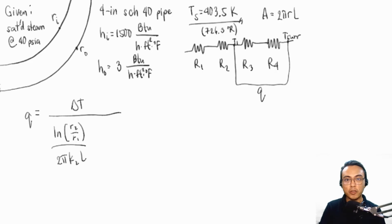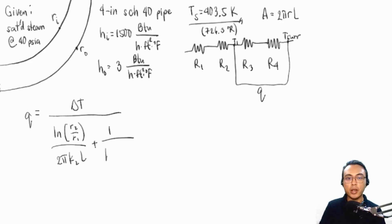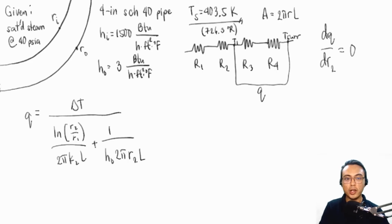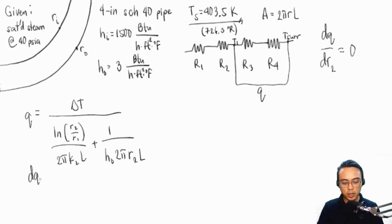To find the critical thickness, we consider only resistances R3 and R4 — the insulator resistance Ln(R2/R1)/(2πK2L) and the outside convection resistance 1/(H_O × 2πR2L). We take the first derivative of Q with respect to R2 and equate it to zero. Using a computing engine, we find that setting dQ/dR2 = 0 gives R2 = K2 / H_O.